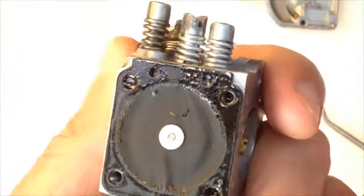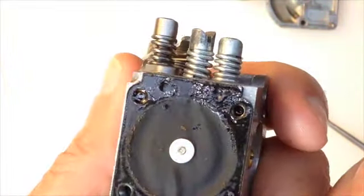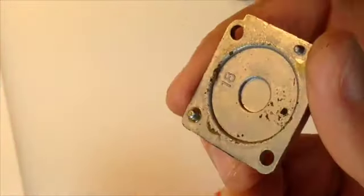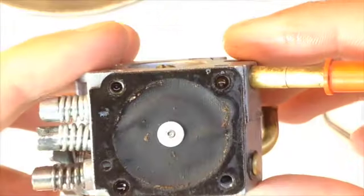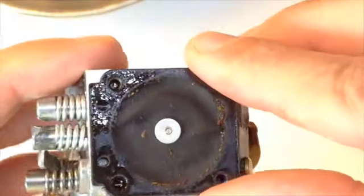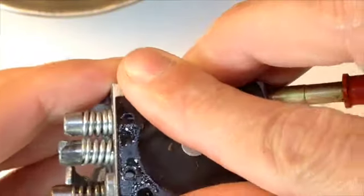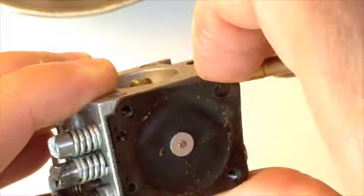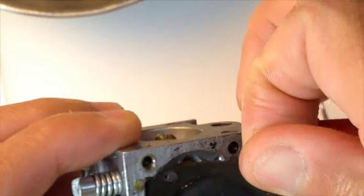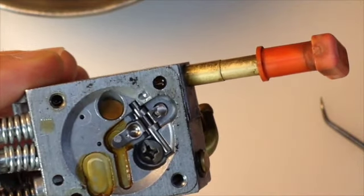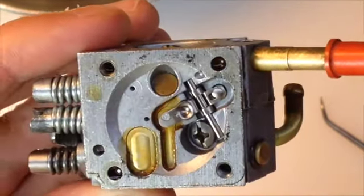There's the metering diaphragm. Lots of little debris that came through that little hole that's in the lid. That's the way it was designed. The metering diaphragm goes right against the cover, and then the gasket goes between the metering diaphragm and the carburetor body. It's the opposite of the pump diaphragm side.